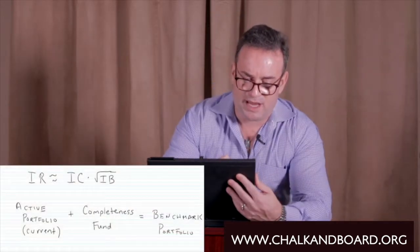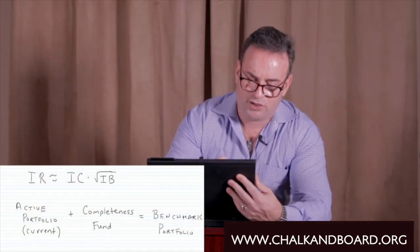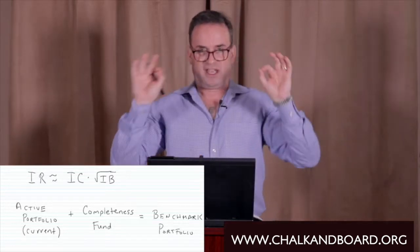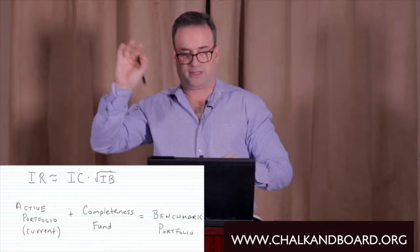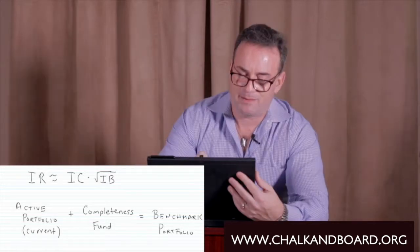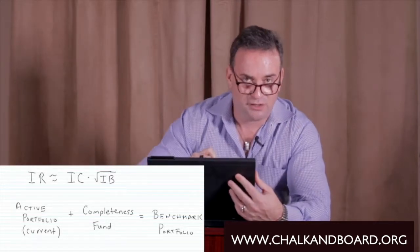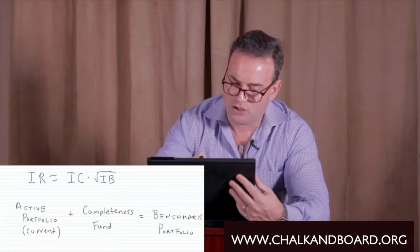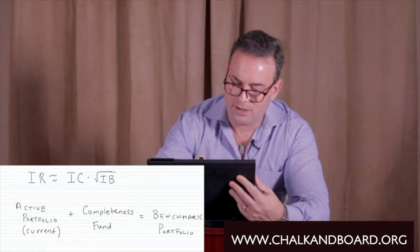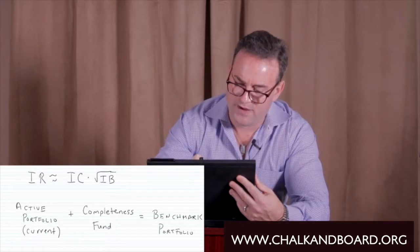Those two components are the information coefficient and the investor breadth. Let's get the formula down. One way to calculate the information ratio — and this is an approximation, so it's approximately equal to — the information ratio is going to be made up of the information coefficient for our investor or portfolio manager, multiplied by the square root of the investor breadth.